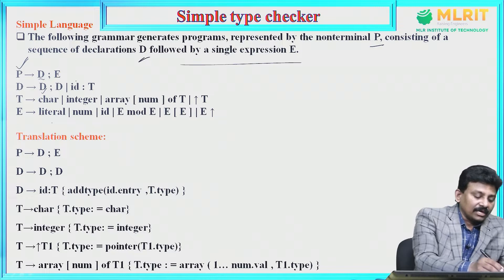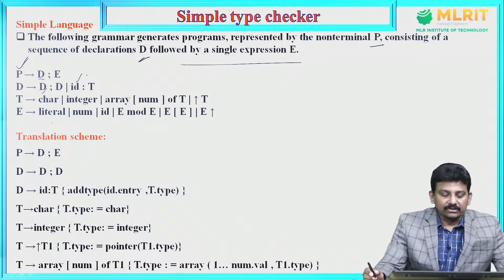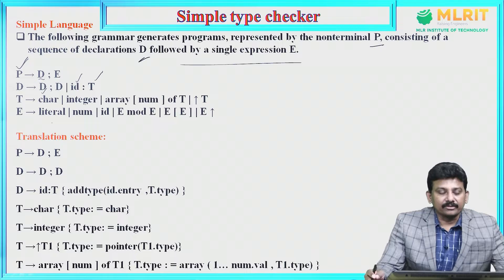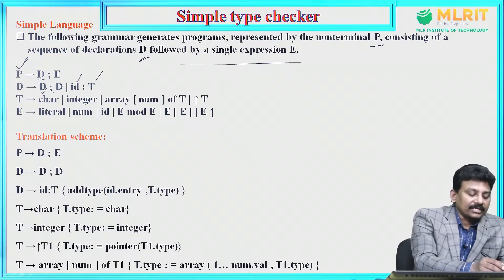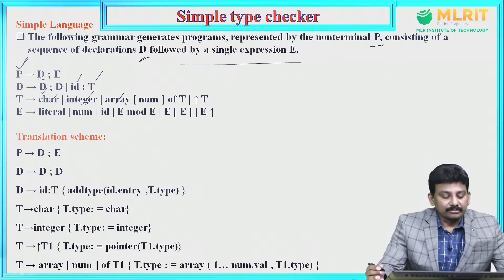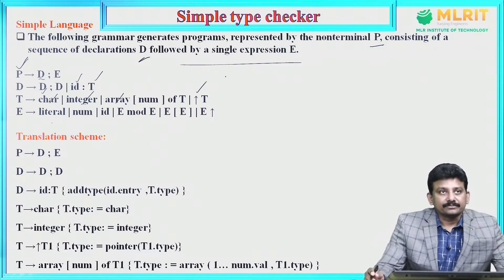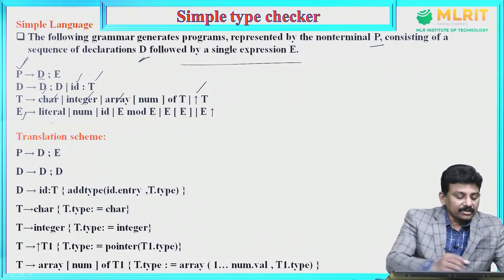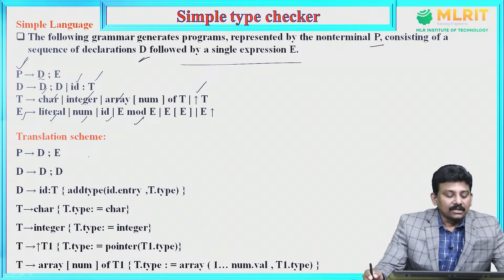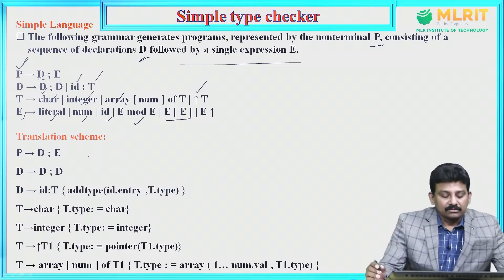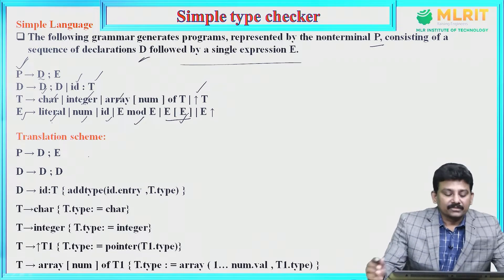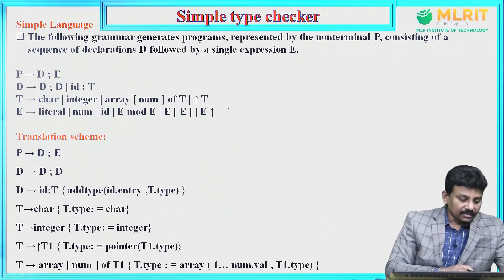Finally, D derives identifier — identifier is a variable — followed by a colon, followed by T, where T represents the type of the identifier. T derives character, T derives integer, T derives array of number of elements of type T, and pointer type T. E represents expression. Expression may be literal, number, or identifier.